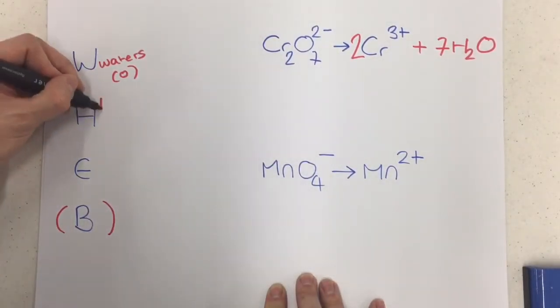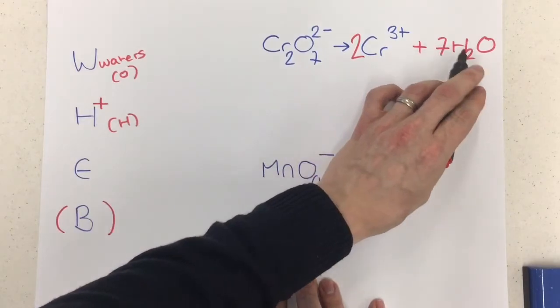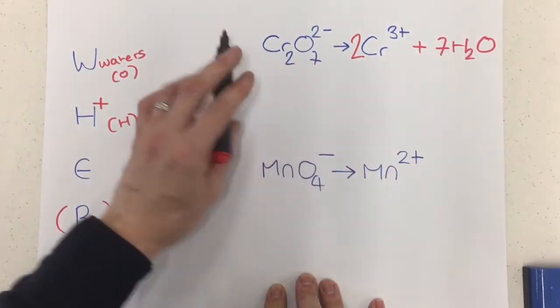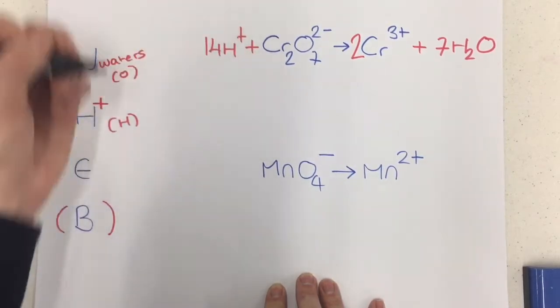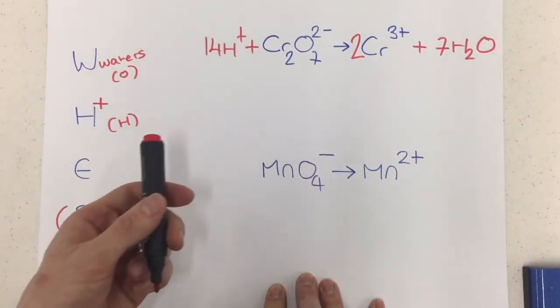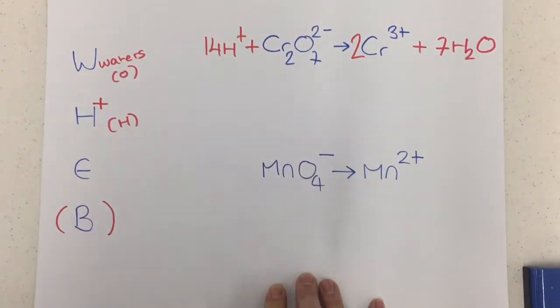Then, for H, I introduce hydrogen ions. These are our acidic condition member and I introduce these to balance out the hydrogens. So I've got 7H2O on this side here, so I need to introduce on this bit 14H+ in order to balance out those hydrogens. So as it stands at the moment, all of my hydrogens, oxygens and chromiums actually balance.